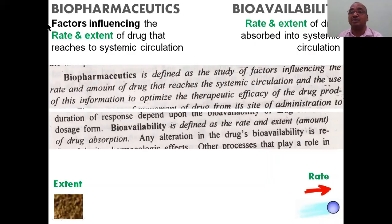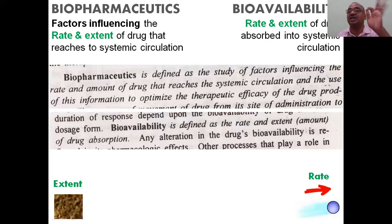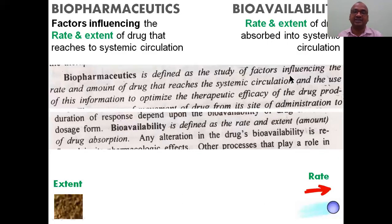Now the definition of biopharmaceutics: factors influencing the rate and extent of drug absorption is called biopharmaceutics. Pharmaceutical factors influence both the rate and extent of drug absorption. Bioavailability is how much — the rate and extent of the drug absorbed into the systemic circulation. This definition is from your textbook and also from Brahmankar.